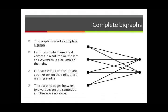Let me show you an example to begin. Here we have a complete bi-graph. This is the complete bi-graph using four vertices on the left and two vertices on the right. I have given myself four vertices arranged in a column on the left, two vertices arranged in a column on the right. The rule for putting in edges is like this: for each vertex on the left and each vertex on the right, there is a single edge.